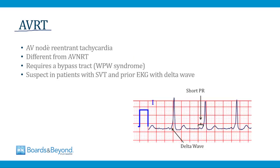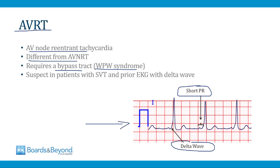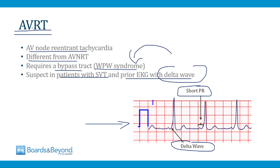AVRT — AV reentrant tachycardia — is another cause of a PSVT, and though it sounds like AVNRT it is a completely different arrhythmia. To develop AVRT, the patient must have a bypass tract, meaning they must have Wolf-Parkinson-White syndrome. Patients with WPW have a delta wave on their EKG and a short PR interval. When a patient with this EKG develops a PSVT, they most likely have gone into AVRT. The treatments for AVRT are similar but slightly different from AVNRT — it can be treated with AV nodal slowing agents and there are surgical options. The main thing to know is that a patient who develops an SVT and has a prior EKG with a delta wave or WPW syndrome most likely has AVRT.